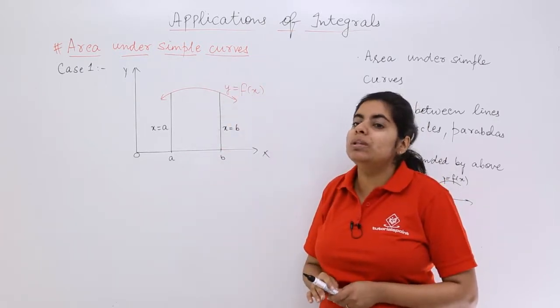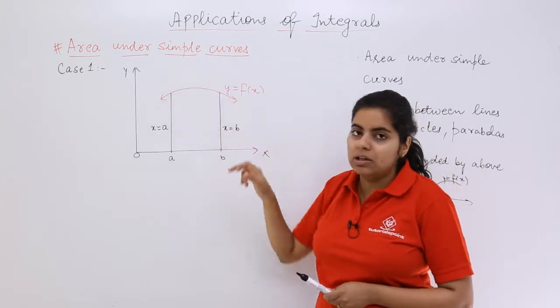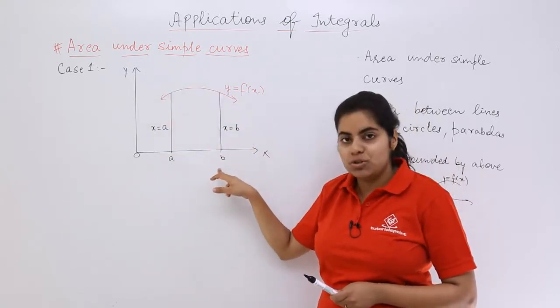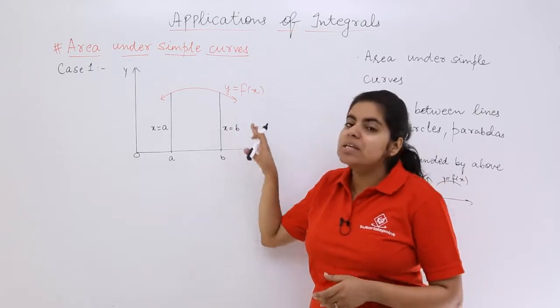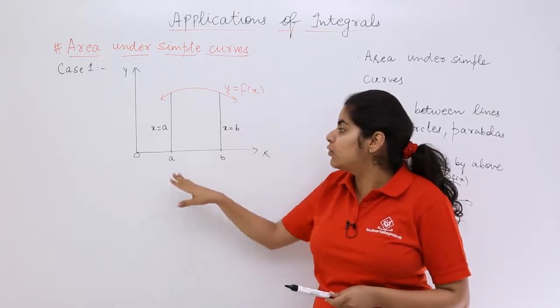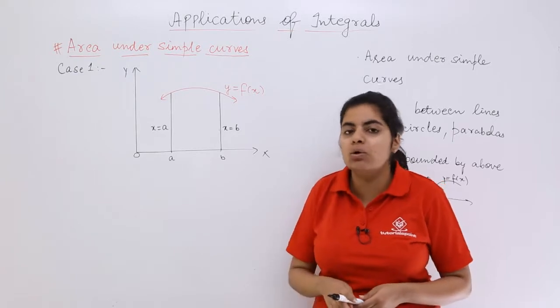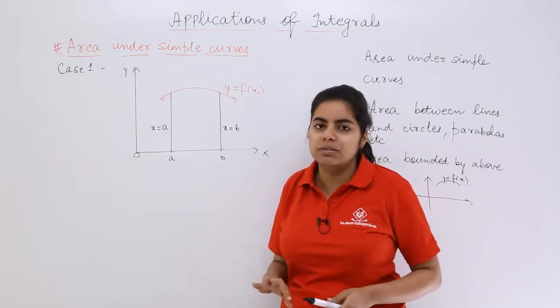Now if you have to compute the area under this simple curve, what we can do is consider the region from a to b, where f is a continuous function from a to b with values greater than 0, that means a positive value.